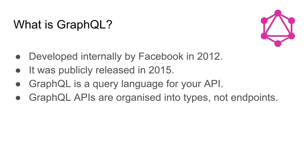So first of all, what is it? It was developed internally by Facebook in 2012 but it's been publicly released in 2015, so it's open source now. It's a query language for your API, so it would serve as a replacement for REST or SOAP APIs. The difference between GraphQL APIs and these traditional APIs is that it's organized into types, not endpoints, and this is one of the advantages as we're going to see in a minute.